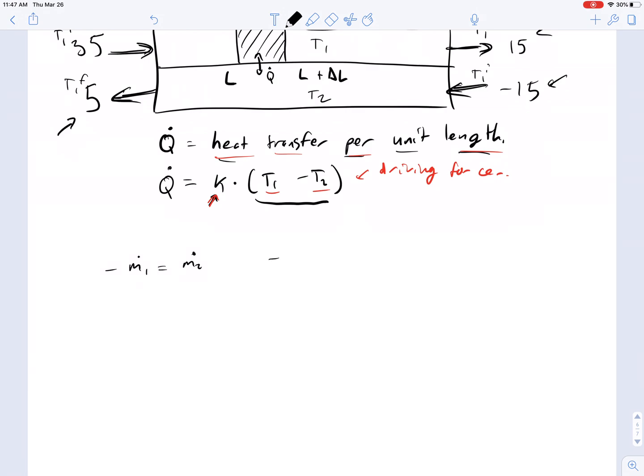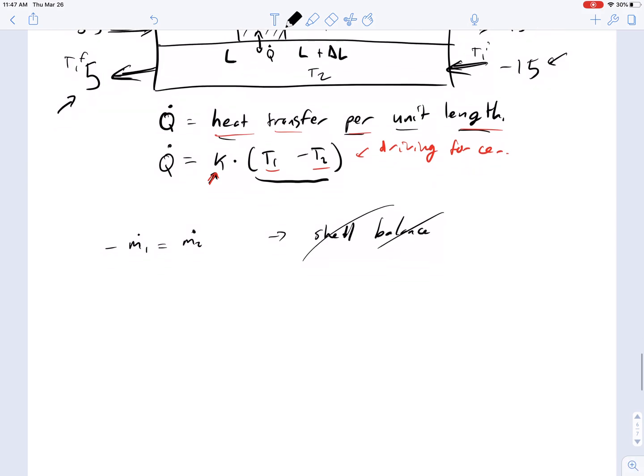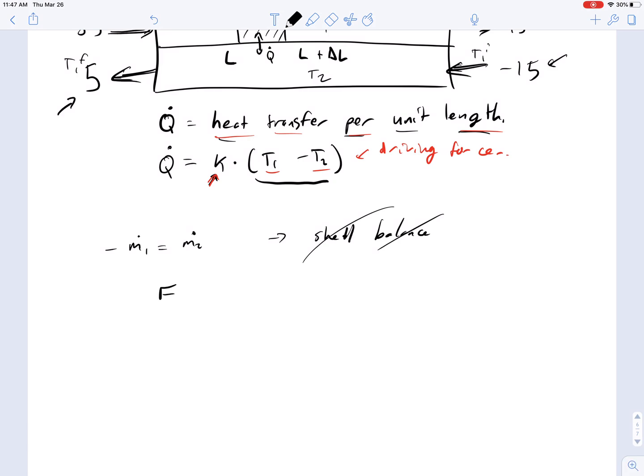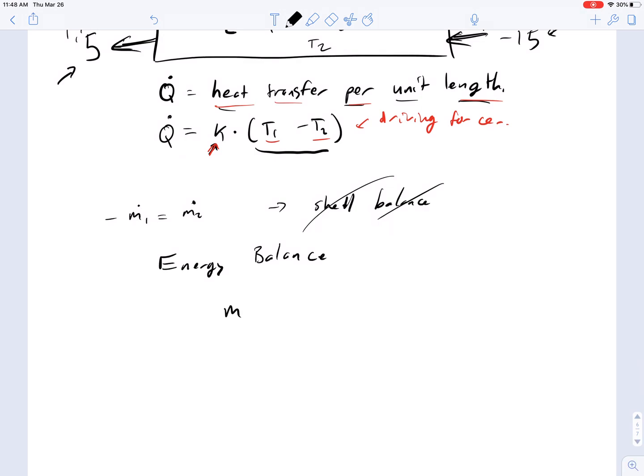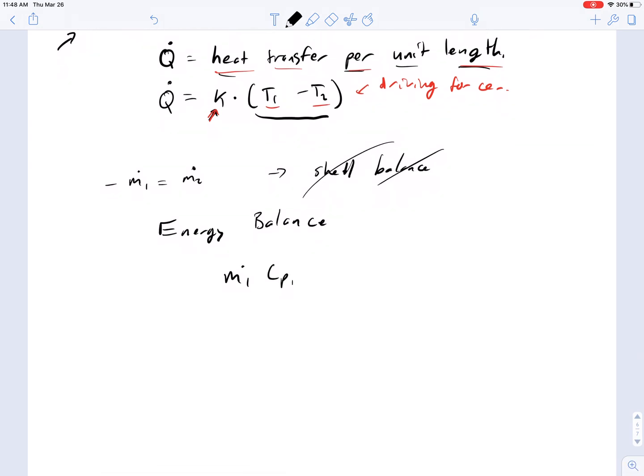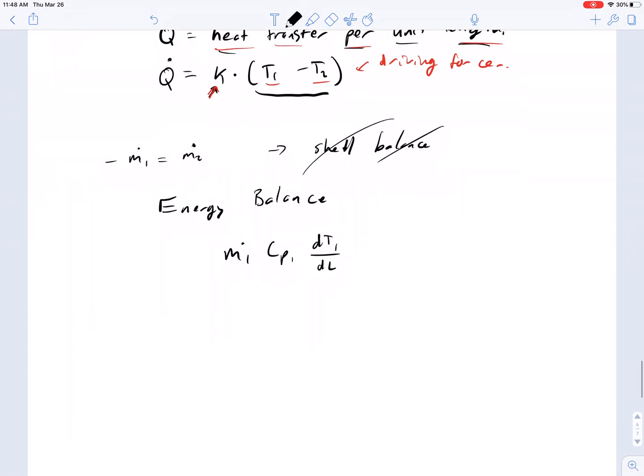We're not going to go through the shell balance here. You should just look at the previous one to know how to do the shell balance. What you end up with for the energy balance, because the shell balance is exactly the same, there is no difference. The only difference comes in the form of what the values for M1 and M2 are. So now we have M1 CP1 DT1/DL equals K times temperature 2 minus temperature 1. This is the energy balance for stream 1. This is the Q term from stream 2 into stream 1.